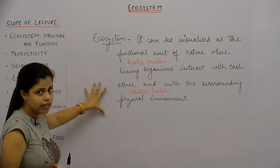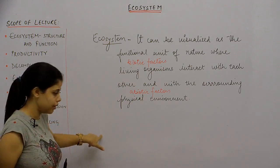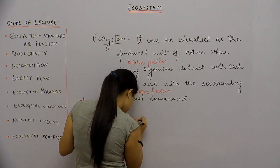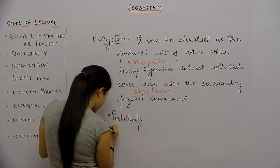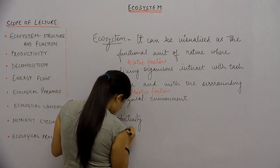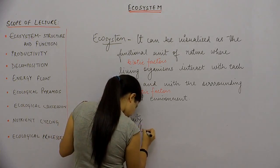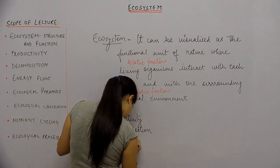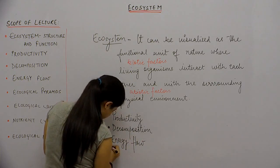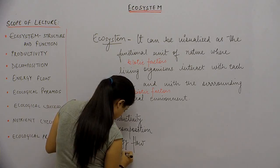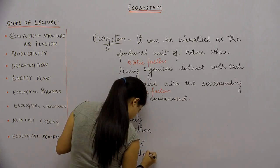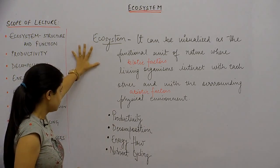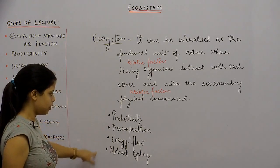For the components of the ecosystem to function, there are a few aspects to be kept in mind. The first is productivity, the second is decomposition, the third is energy flow, and the fourth is nutrient cycling. If any of these aspects are not considered, then an ideal ecosystem will not be possible to function. So for the ecosystem to function, these are the four aspects to be considered.